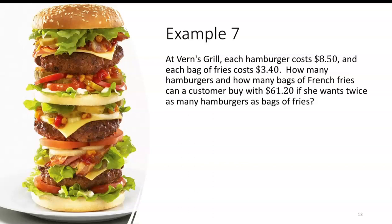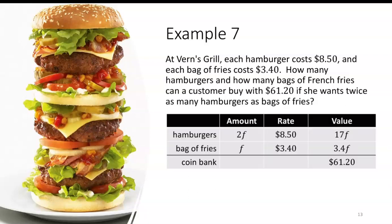For a mixture problem like this one where I'm mixing hamburgers and french fries, I find it helpful to form a table where your columns are the amount, rate, and value, and the amount is the quantity of each item, the rate is the rate per item, and then the value.